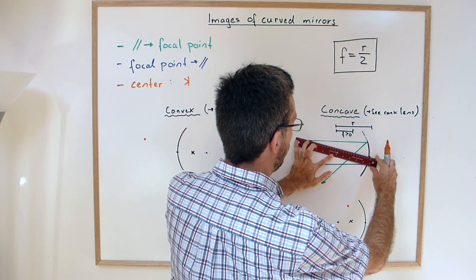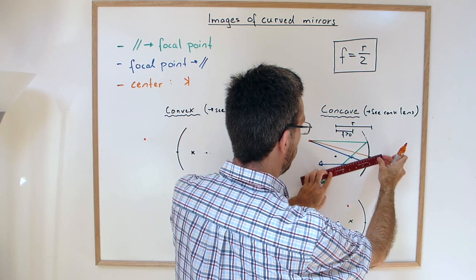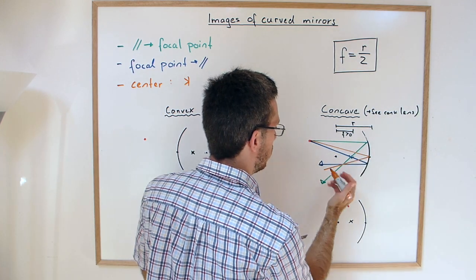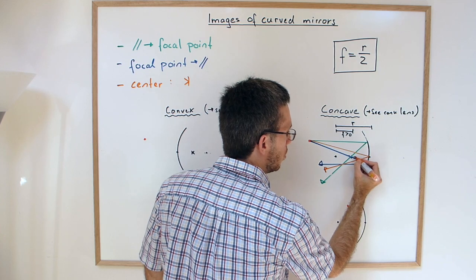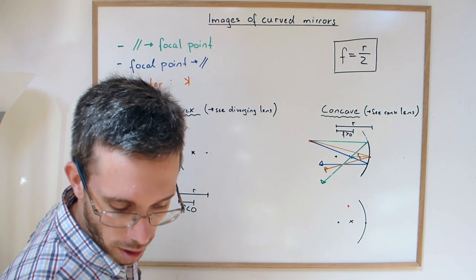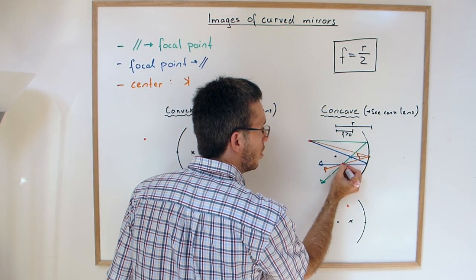So we will have from the normal, incoming angle is equal to outgoing angle. So the incoming angle is equal to the outgoing angle, and I have found my image.